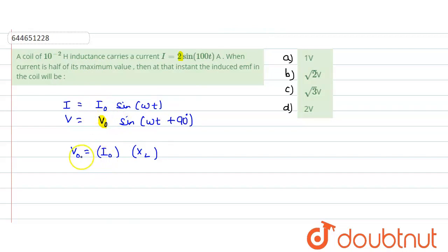Like for a normal circuit, we will be using V equals to I into R. In case of inductor, we will be using V naught equals to I naught into XL. If you put the value of I naught, I naught is 2. What is XL? XL is basically omega into L. If you compare these two, omega would be equals to 100. So XL is omega into L. L value is 10 raised to the power minus 2. We get this value as 2.